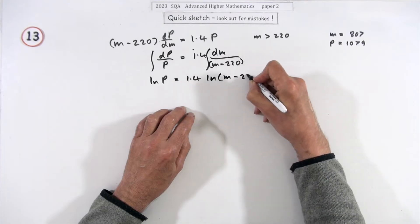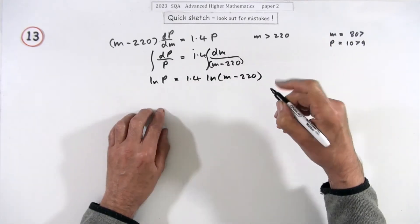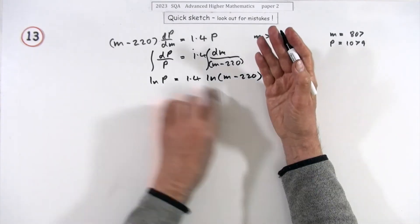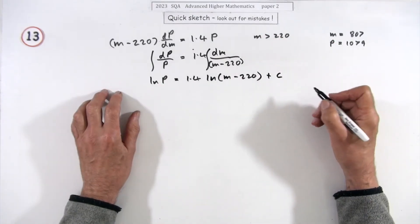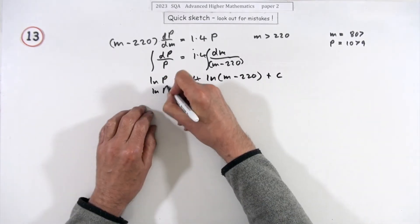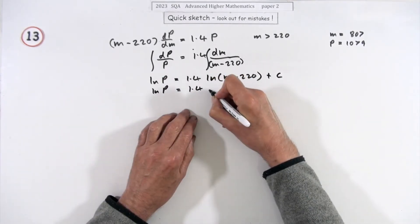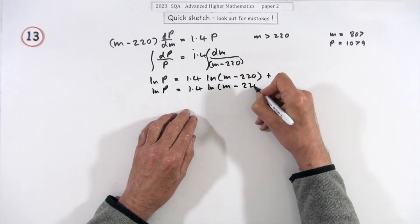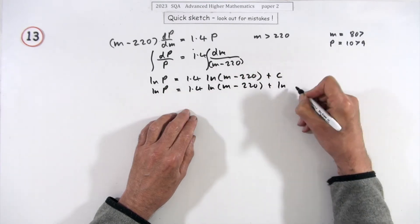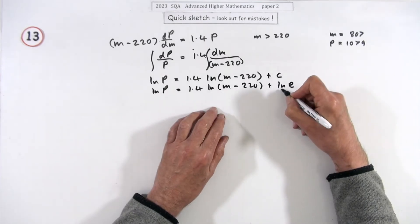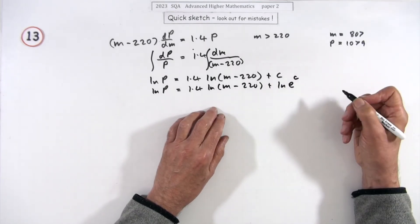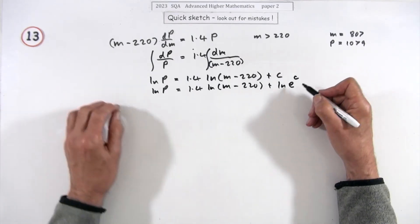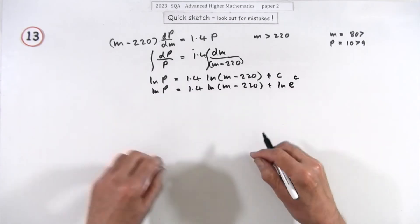So we get ln(p) = 1.4 ln(m minus 220) plus c. Annoyingly there's a plus c, but you can write c as ln(e^c) to bring it into log form and join the rest of the logs — I don't want to work out the decimal value of c yet, just carry it through.